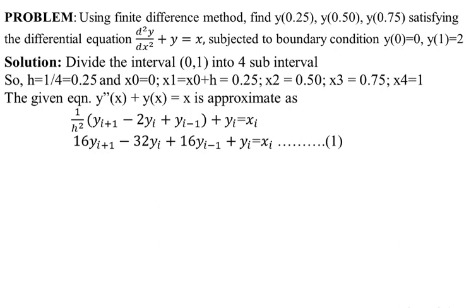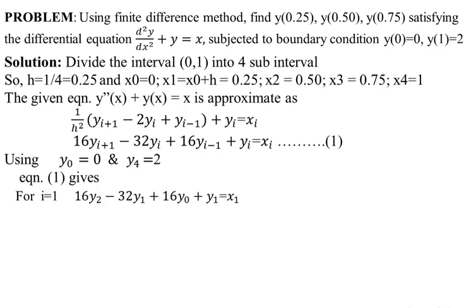We apply boundary conditions y₀ = 0 and y₄ = 2, and substitute i = 1, 2, 3. For i = 1: 16y₂ − 32y₁ + 16y₀ + y₁ = x₁. Substituting y₀ = 0 and x₁ = 0.25, and rearranging, we get: 16y₂ − 31y₁ = 0.25.